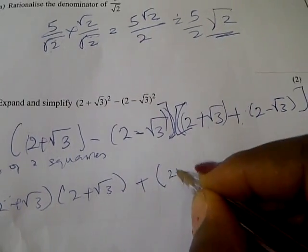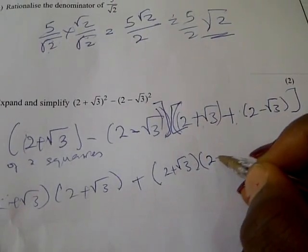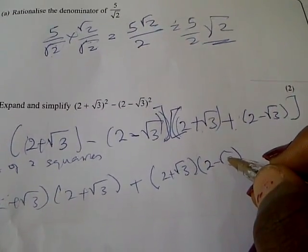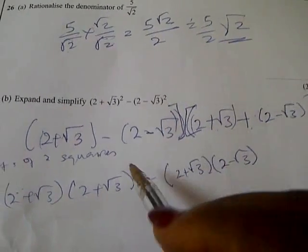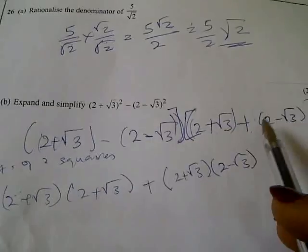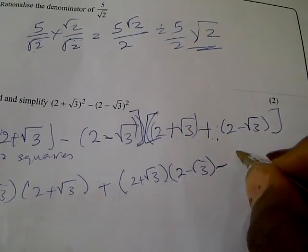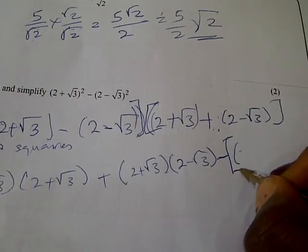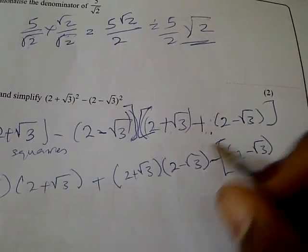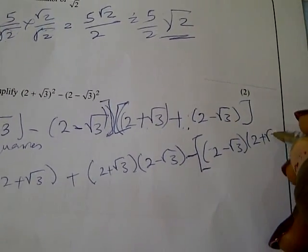Plus (2 + √3) times (2 − √3). We multiply this with this, and this with this. Then you have minus (2 − √3) times (2 + √3).